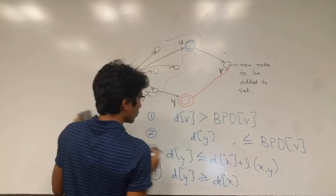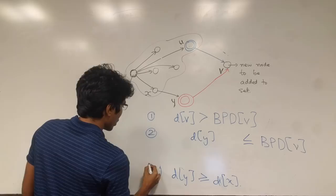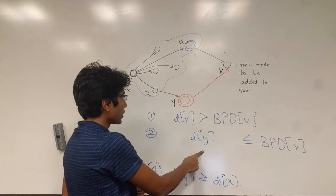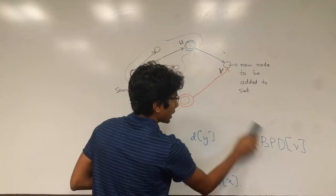Now best possible distance is greater than this quantity. D of v is greater than best possible distance, so d of v actually is greater than this quantity.